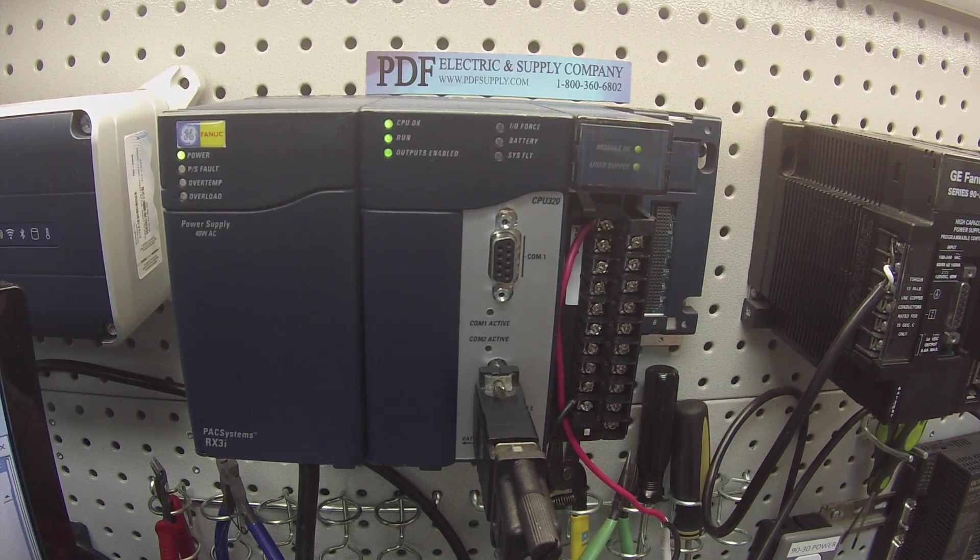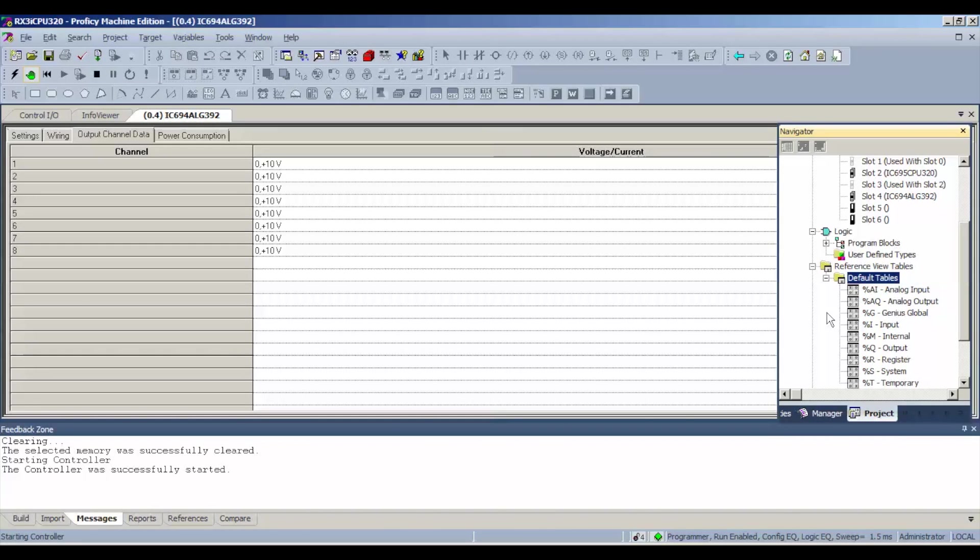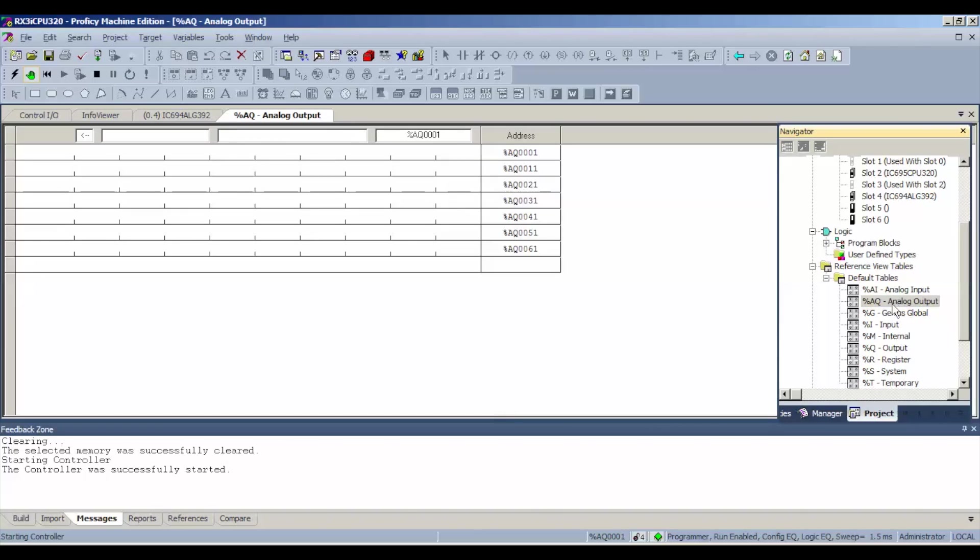Next thing we're going to do is open up the default tables. Second selection down is analog output, double click or right click and open. Now all the values we're able to put in here. I'm going to give it full value of 32,000. 32,000 should yield 10 volts on a good working card.